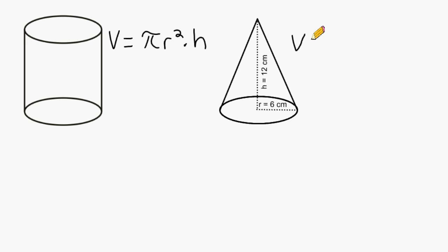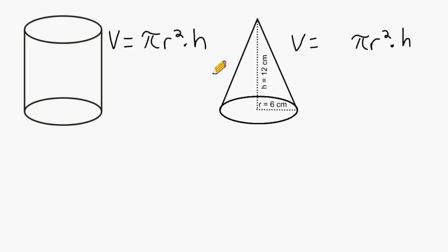And to find the volume of a cone, we basically do the same thing with one small exception. We will find the area of the cone's base, which is a circle, so we are going to multiply pi times radius to the second power, multiplied by the height of the cone. But we should notice that the volume of a cone would be less than the volume of a cylinder that it would occupy. In fact, the volume of a cone would be one-third of the volume of a cylinder. So what we can do is multiply by one-third or divide by three.